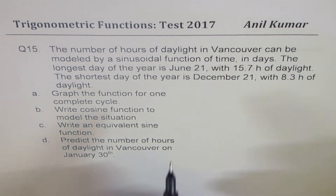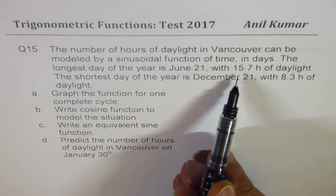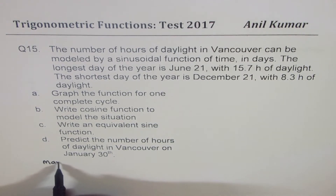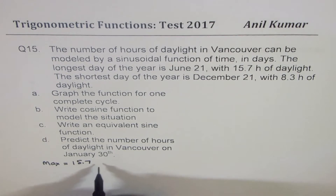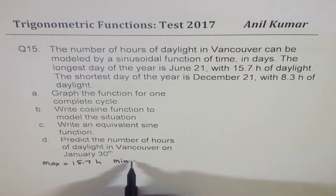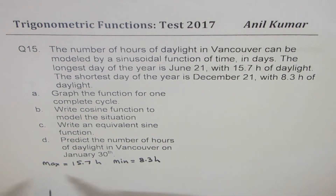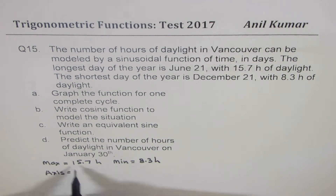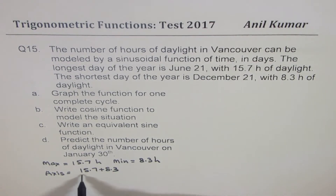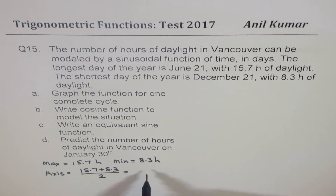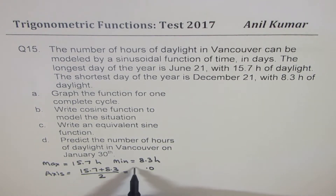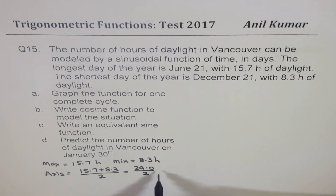What we are given here is: maximum daylight is 15.7 hours, and minimum daylight is 8.3 hours. That gives you the average value or the axis. The axis is the average of these two: 15.7 plus 8.3 divided by 2, which is 24 divided by 2, which equals 12. So the axis is 12.